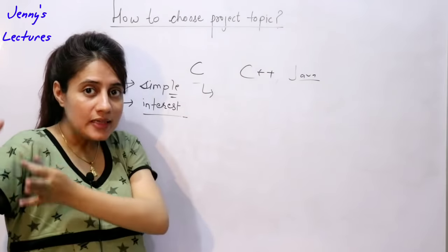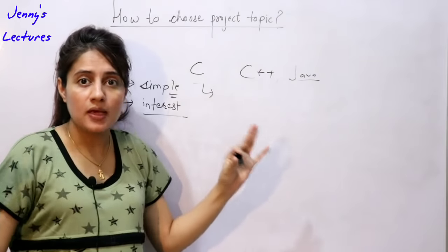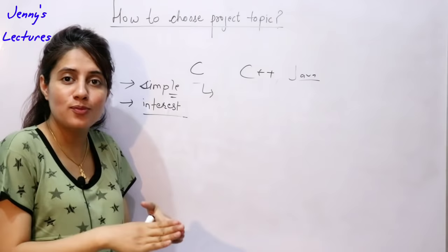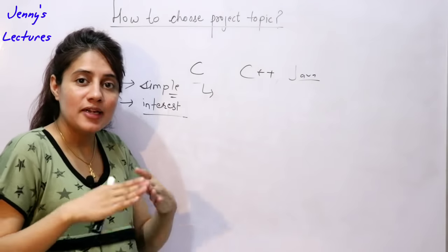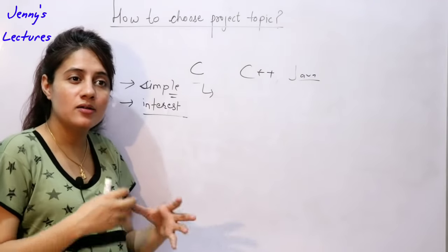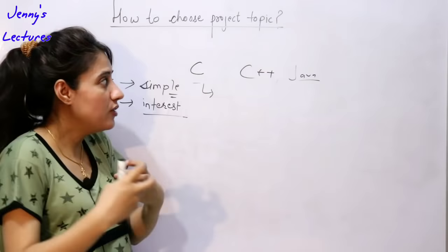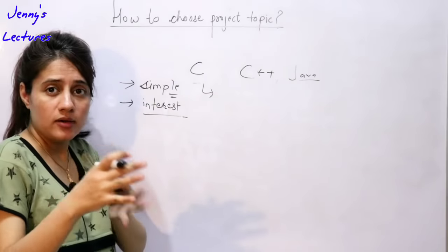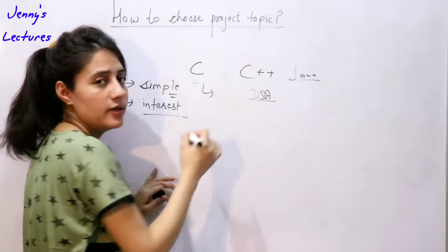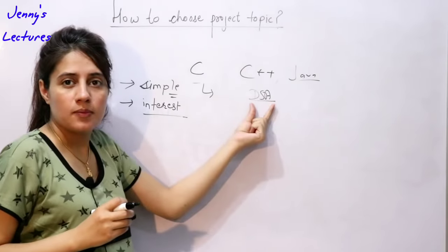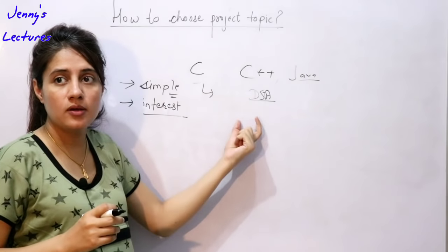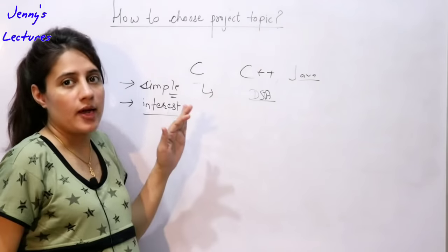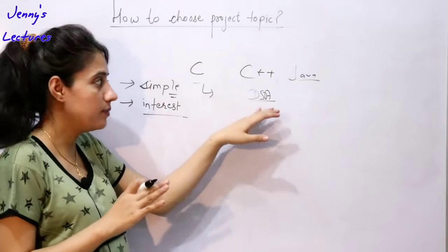By third year, you are in a state where you can think about something big. Ideas will automatically come into your mind if you have worked on four projects. You'll know how to add innovative features to existing projects. Also, in third or fourth semester you have DSA — try to implement those concepts, like tree concepts or dynamic programming problems. You will gain a lot from developing these.